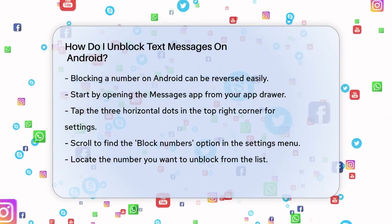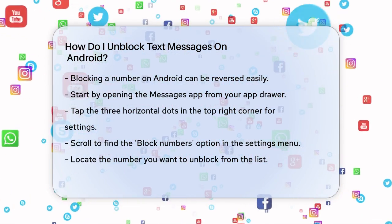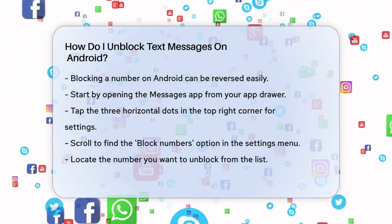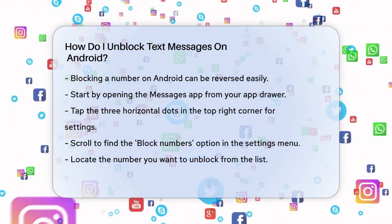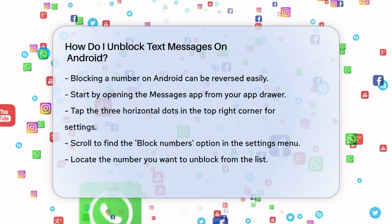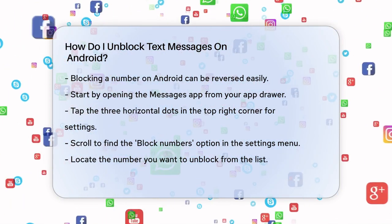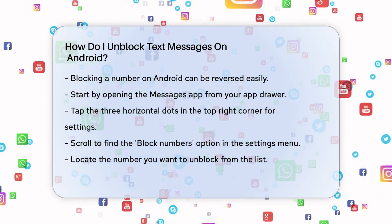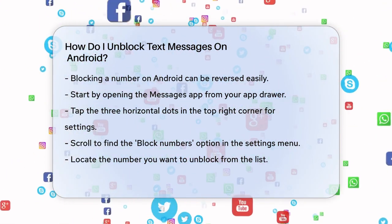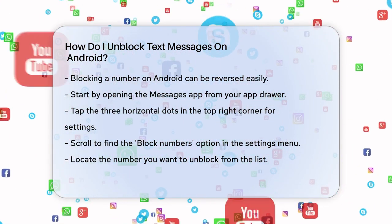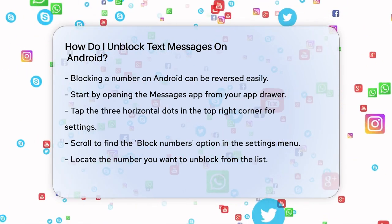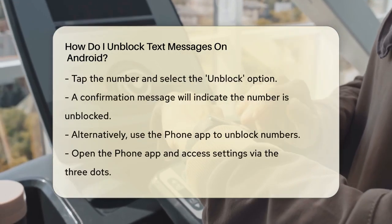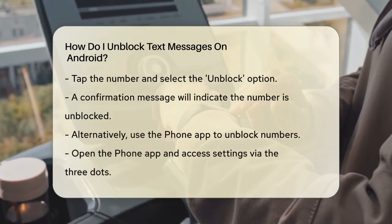Open your Messages app, which is usually found in your app drawer. Once open, tap the three horizontal dots at the top right corner of the screen and select Settings. In the Settings menu, scroll down and find the Block Numbers option.